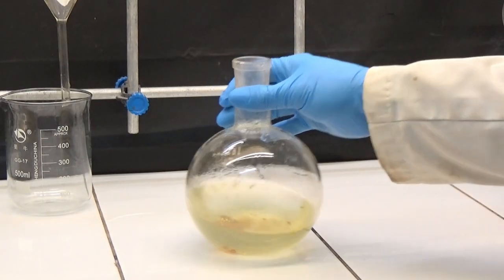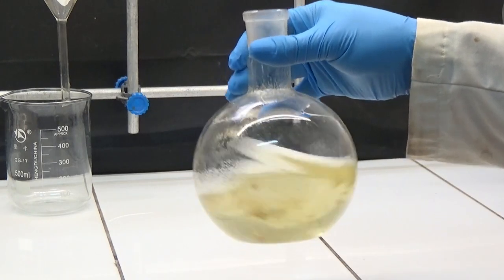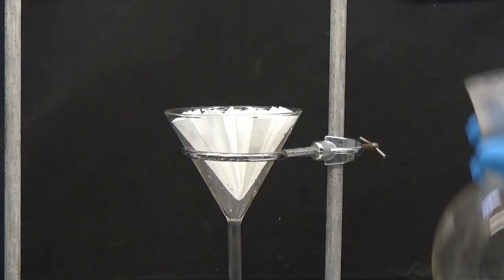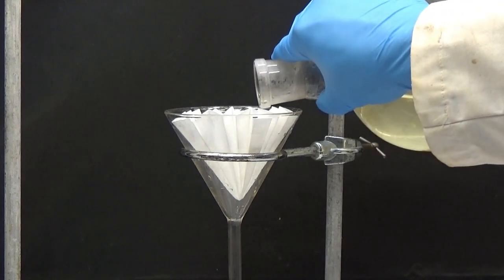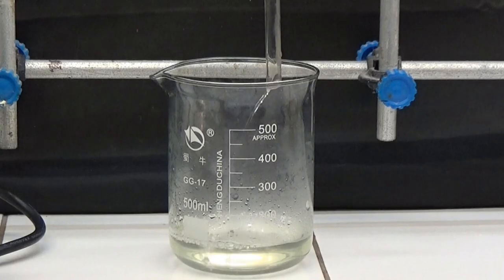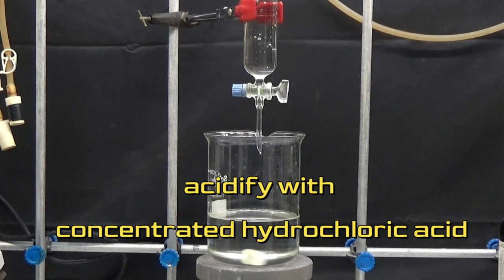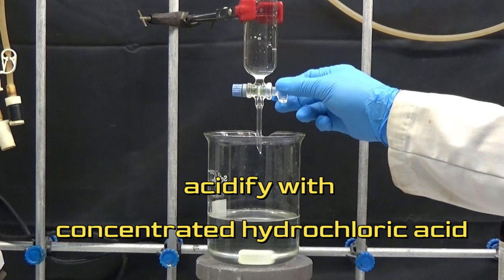Let the contents of the flask cool and filter to remove the resin compounds. The filtrate is acidified at pH 2 by concentrated hydrochloric acid.